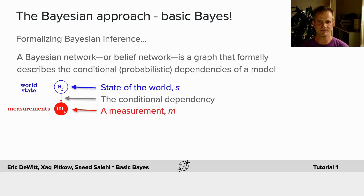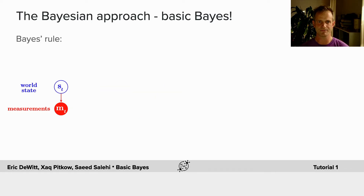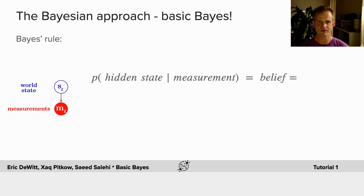Note that S and M are subscripted with T. That's because in other days you will see how to extend these Bayesian networks to states, observations, and actions across time. So what is Bayes' rule? Very simply: what is the probability of a hidden state given a measurement?